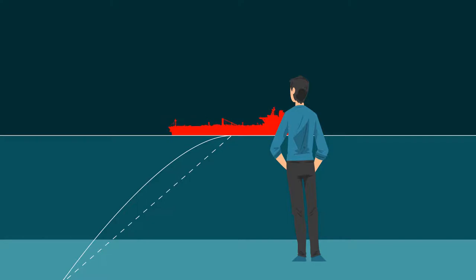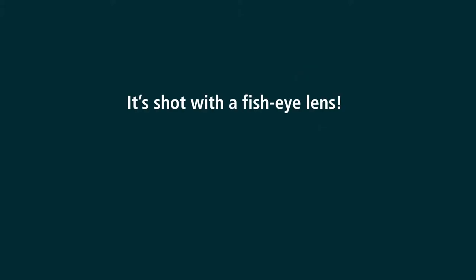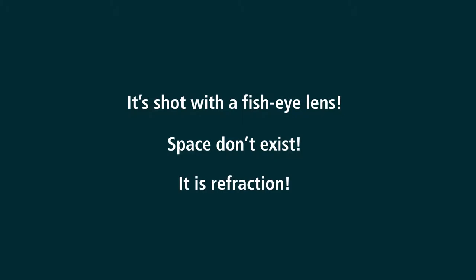You can also clearly see the curvature of the earth when objects are partially hidden, like islands, towers, and windmills, or ships disappearing over the horizon. When you present clear photographic evidence of this type, you tend to get the same reaction over and over again: 'it is shot with a fisheye lens,' 'space doesn't exist,' or 'it is refraction.'